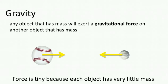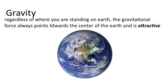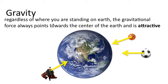So these two objects, even though they're exerting forces on each other and exerting forces on us as well, we can't feel those forces because their mass is too small. Regardless of where you're standing on the Earth, the gravitational force always points towards the center of the Earth and is attractive, so all of these objects will always experience a force that points towards the center of the Earth.